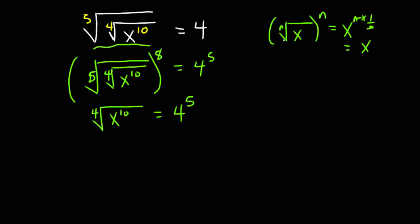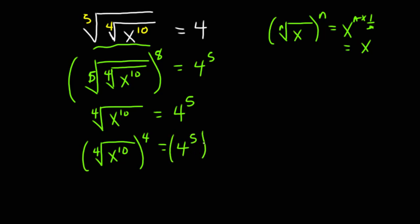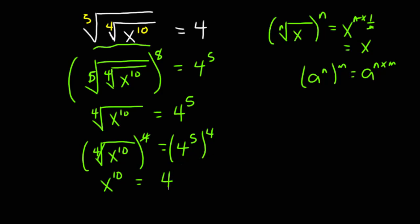Once again, I can apply this property to remove the fourth root. So I'm going to raise this whole expression to 4 and do the same thing on the right side. I'll get the fourth root of x exponent 10, all exponent 4, and this gives us 4 exponent 5 all exponent 4. By this property, this cancels that and the fourth root is taken care of, giving us x exponent 10. Now, generally if we have a exponent n all exponent m, this is given by a exponent n times m, so this is the same as 4 exponent 5 times 4, which gives us 4 exponent 20.